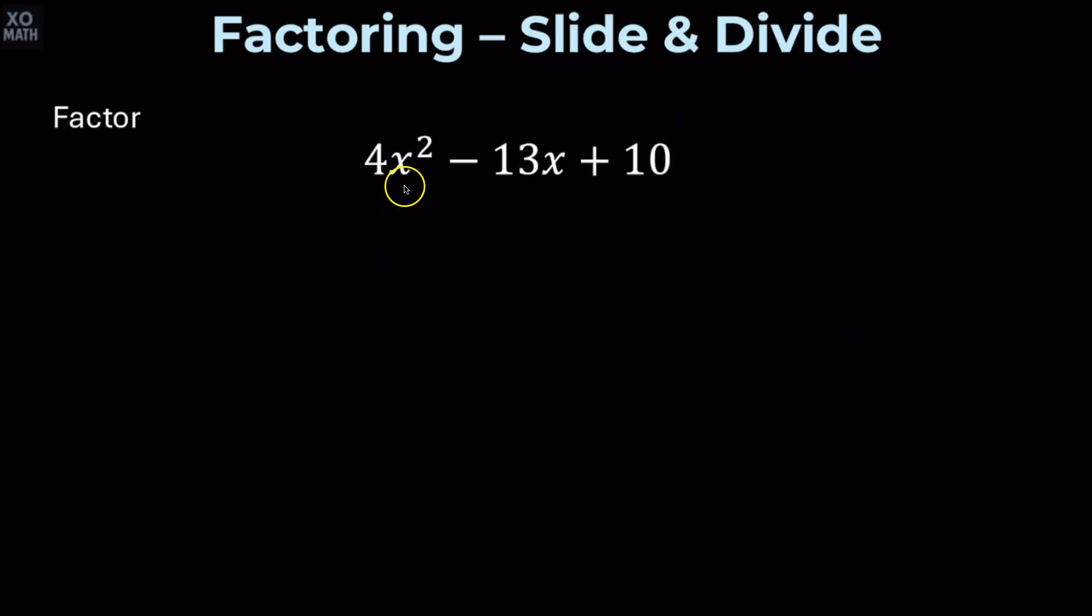And now let's factor 4x squared minus 13x plus 10. We'll go ahead and slide over that 4 through multiplication. We'll get the quadratic x squared minus 13x plus 40.